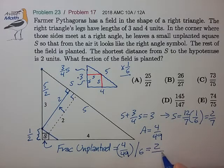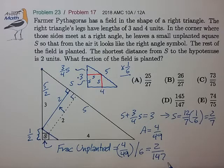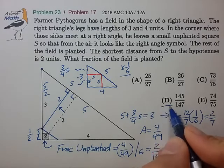So the fraction unplanted is 2 over 147. So the fraction that is planted is 145 over 147, which is choice D.